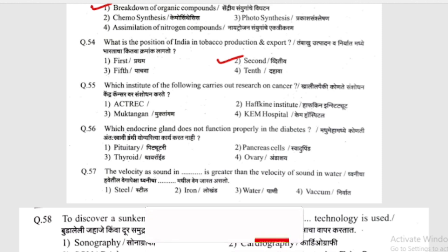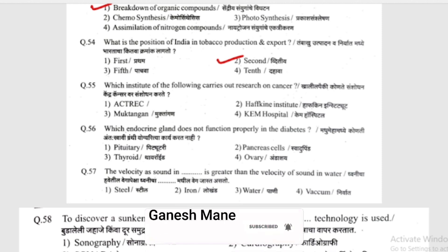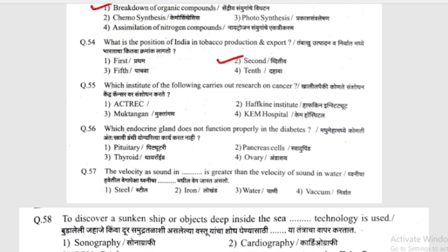Which of the following institutes carries out research on cancer? (Khali peki konte saunshodhan kendra cancer var saunshodhan karate.) Options: ACT-REC, Haffkine Institute, Muktangan, or Kame Hospital.